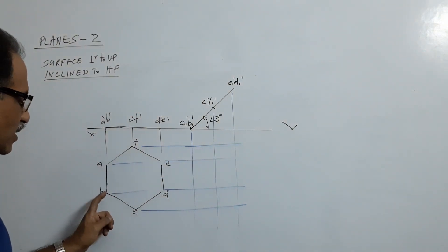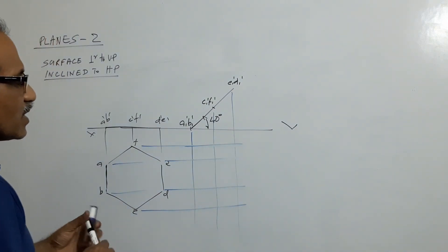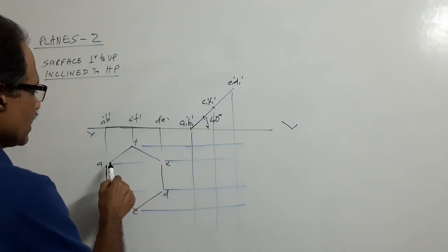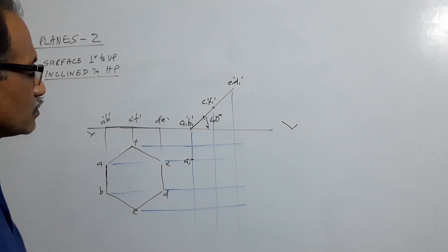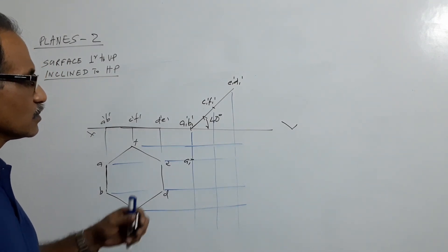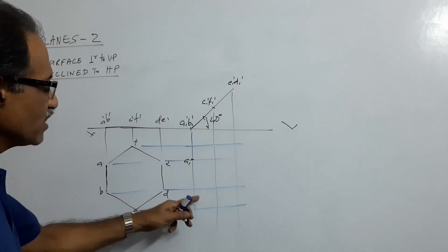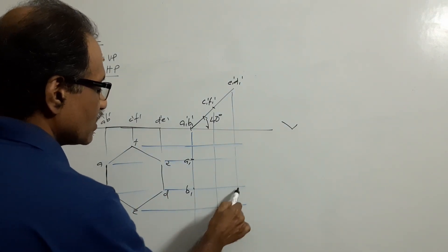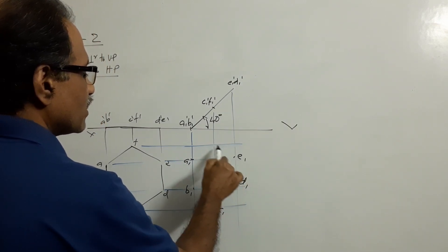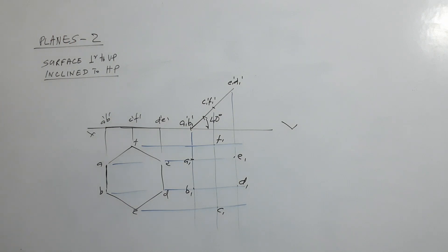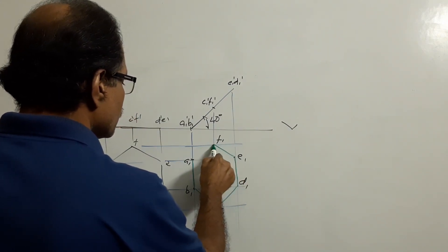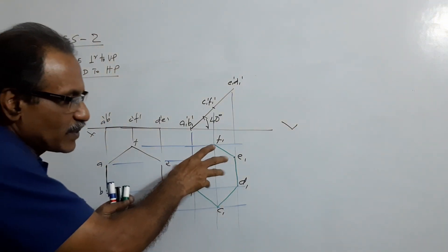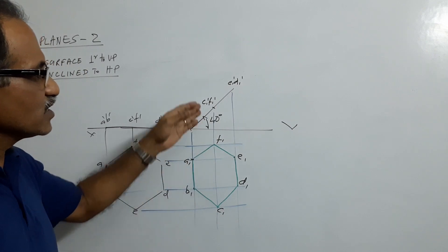Draw horizontal projectors from the first plan. The horizontal projectors through A will pass through E, through B will pass through D. Draw vertical projectors and horizontal projectors from the bottom line. Transfer the intersection points — that is P1, D1, E1, F1. Connect all these points. What do you get? You get a compressed hexagon. This is the final plan. This is the final elevation. Finished.